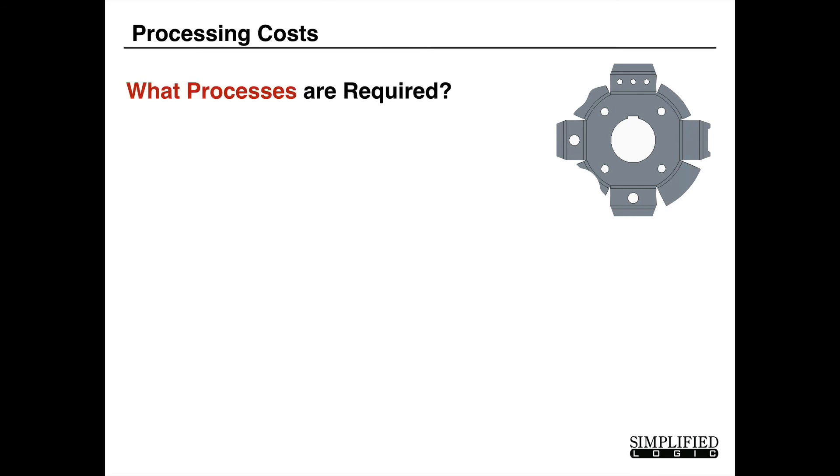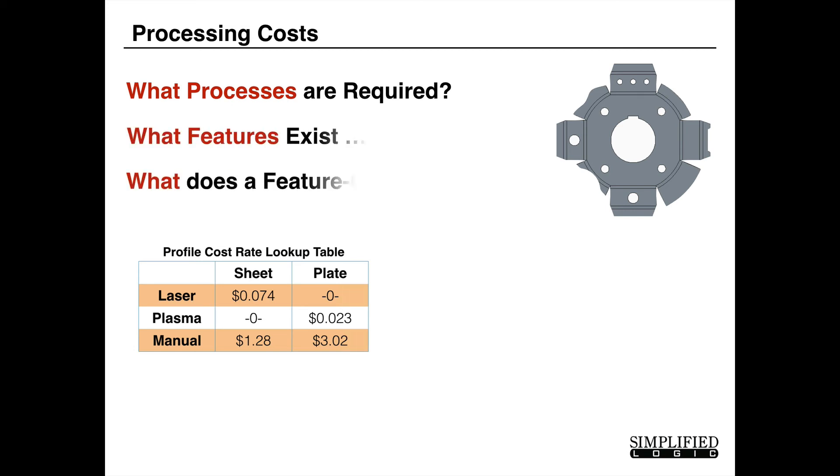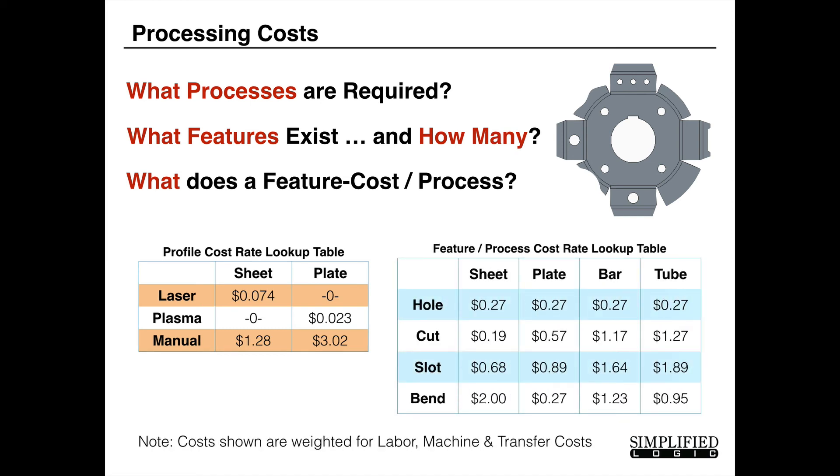The processing costs are a little bit different. You have to understand what processes are involved, and that could be something like, is it a laser cut part or a plasma cut part, or is it something that's manually done? And also what features exist and how many, or what does a feature cost to process? So if you're dealing with certain types of materials and certain types of features, you could actually come up with internal costs for answering simple questions like, how much does it cost to put a slot in a piece of sheet metal versus a plate versus a bar versus a tube?